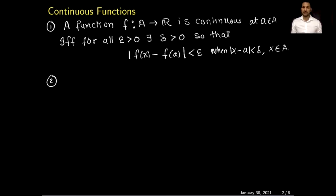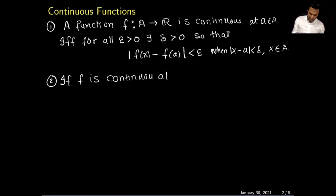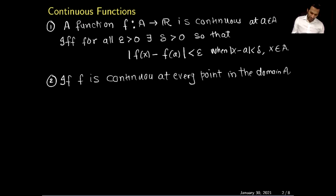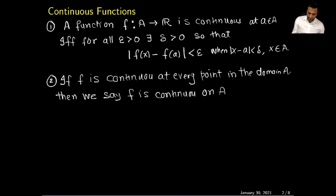A second definition is what does it mean by a function continuous on a set? If f is continuous at every point in the domain A, then we say f is continuous on A. That is, if the function is continuous at every point of the set A, then we call the function continuous on A.